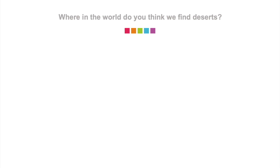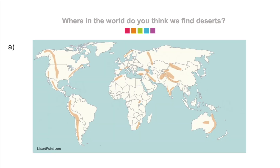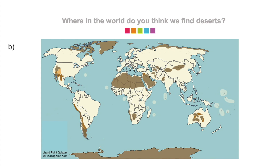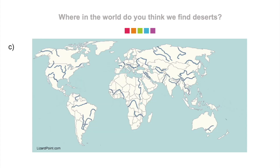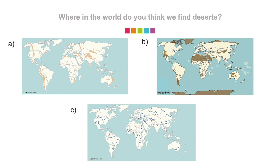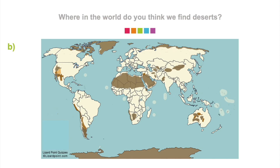As we will be talking about deserts, I think it is important to know where we actually find them. Let's have a go at answering this question: where in the world do you think we find deserts? Here we have map A, which if correct would mean we find deserts in the orange areas on this map. Here we have map B, which if correct would mean we find deserts in the brown areas of this map. And finally, map C, which if correct would mean we find deserts in the blue areas of this map. That's right, it's map B. We find deserts in the brown areas on this map.